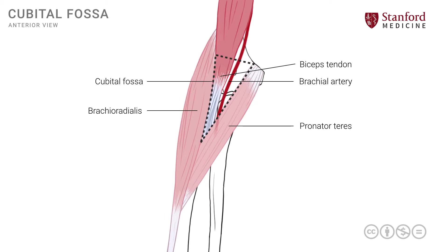The brachial artery is another key structure that enters the cubital fossa and exits from its inferior edge. More medial to the brachial artery is the median nerve, which is one of the key branches from the brachial plexus. The median nerve also enters the cubital fossa and exits from its inferior or medial edge, going on to supply many of the key muscles in the forearm and the hand. Thus we have reviewed the cubital fossa, its formation and boundaries, and some of the key structures that traverse this region.